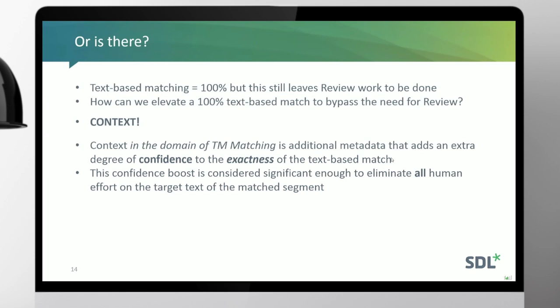The business goal here is to eliminate any human effort at all for those particular segments. TM matching technology influences cost because cost of work equals cost. There are multiple definitions of context — different tools have them, and within World Server itself we have at least two, which I'm going to talk about now. There are also a couple of other things in our R&D backlog for 2019 about defining additional factors that can provide the same kind of confidence boost that this is indeed a fully correct translation for where it's being utilized.